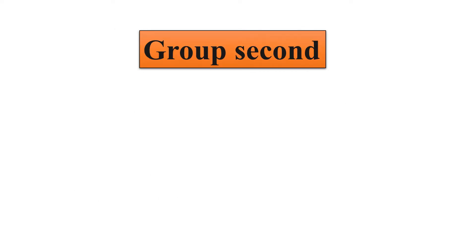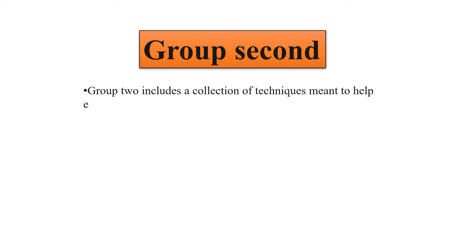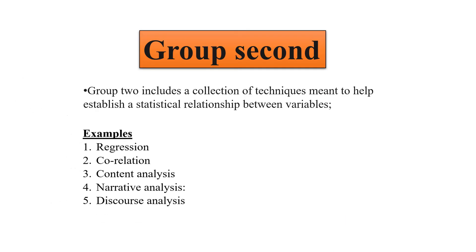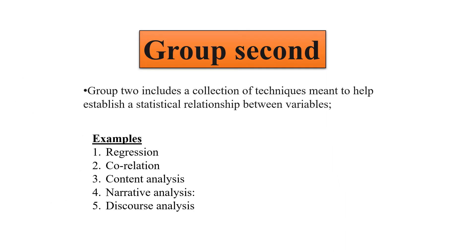Group two includes a collection of techniques meant to help establish a statistical relationship between the variables. For example, regression analysis and correlation analysis in the case of quantitative studies.